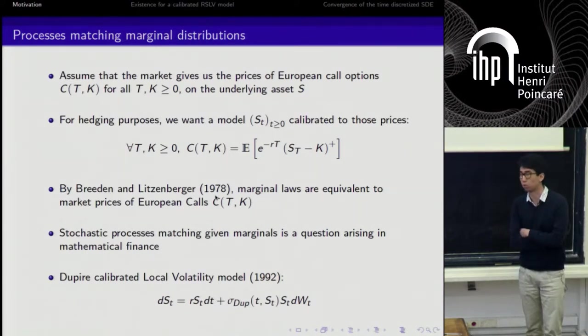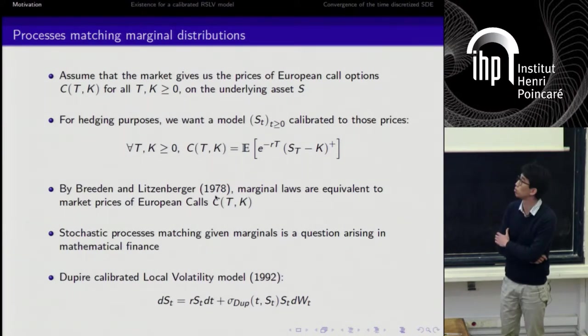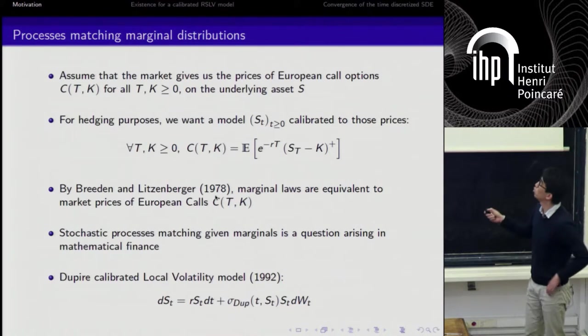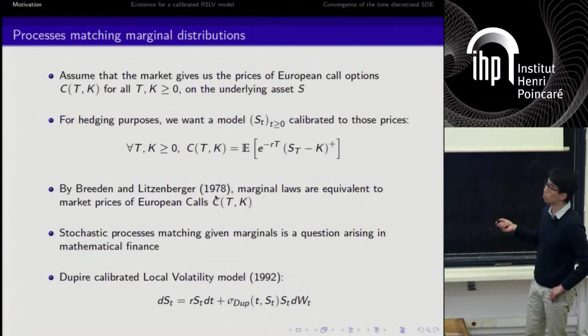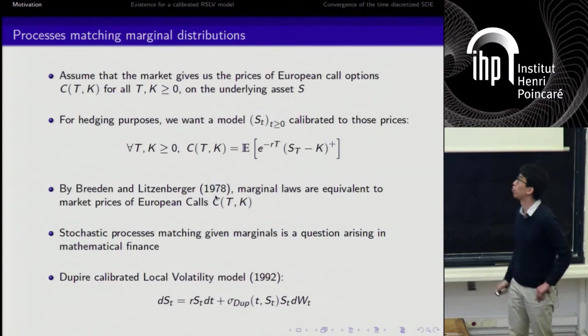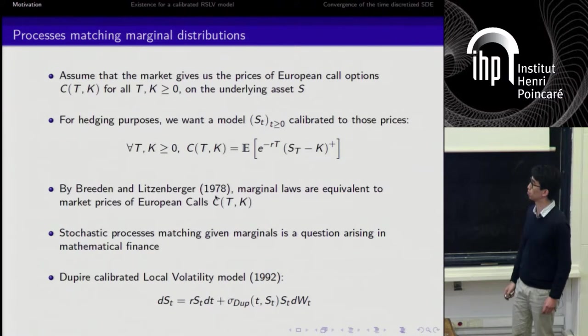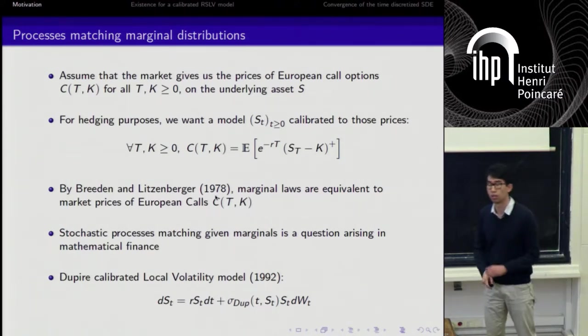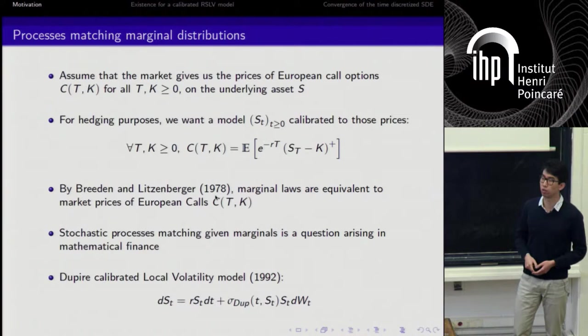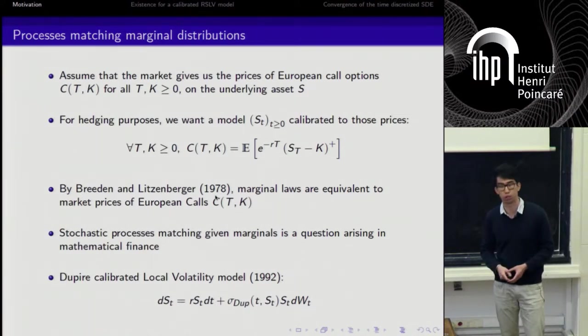Moreover, we know this since 1978 by a result from Breeden and Litzenberger: if we make this assumption that we know all the call prices given by the market, the knowledge of all those prices is equivalent to the knowledge of the marginal laws of the underlying asset S_T for all positive T. This is why stochastic processes matching given marginals is a problem that arises naturally in mathematical finance.